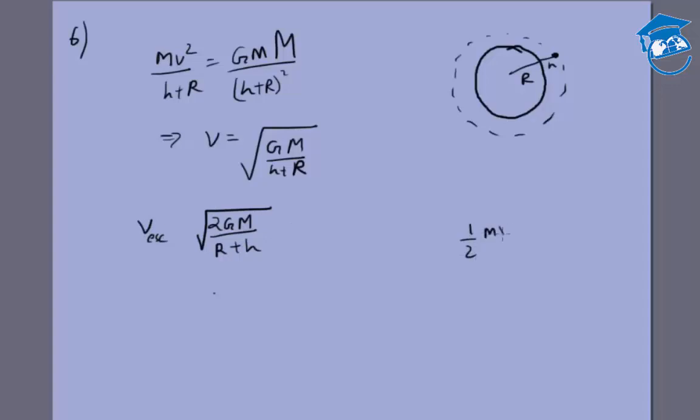from half mv squared is equal to GMm by (R plus h), because we are saying the kinetic energy minus this is equal to 0, which means the kinetic energy minus potential energy, total energy is 0. So finally when this becomes 0 it can have a velocity 0. So v escape is root 2GM by (R plus h).